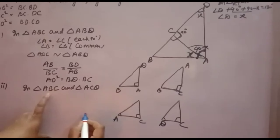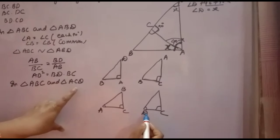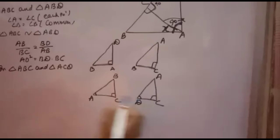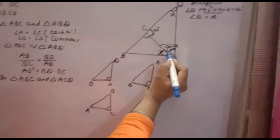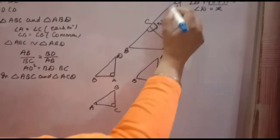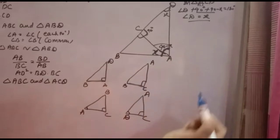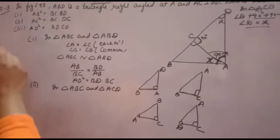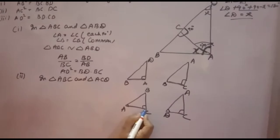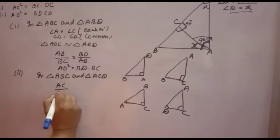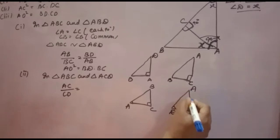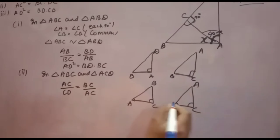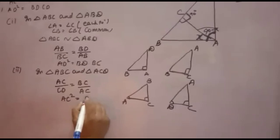What is left — B you will write here, and A, D, C — what is left is A, so you write A here. This is the important step: why you take A here and D there — because they are equal, as we calculated. Now, you want AC², so you will take: AC over CD, then corresponding to BC you have AC. So you write AC/CD = BC/AC. Now AC into AC gives AC², which equals BC into CD. This is the second part.